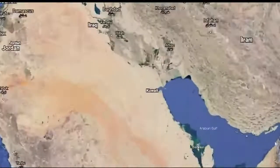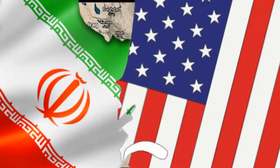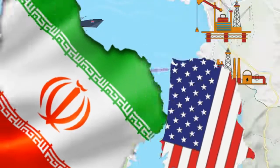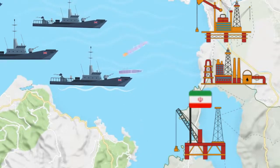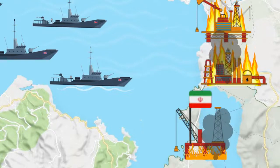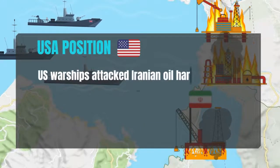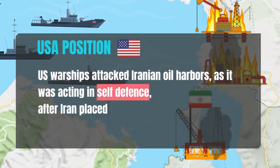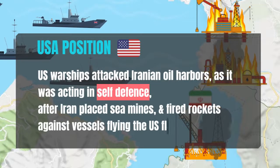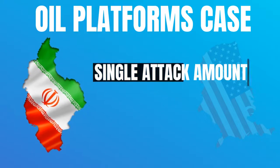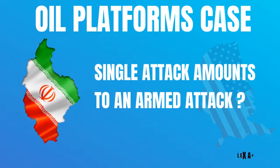In a later case, the World Court looked into the Oil Platforms dispute between Iran and the USA. The case concerns the destruction of Iranian oil production platforms in the Gulf by the American army, which interrupted Iranian oil production for several years. The USA argued that it was acting in self-defense after Iran placed sea mines and fired rockets against commercial vessels flying the American flag.